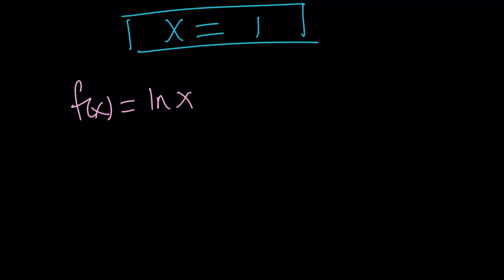If f of x is defined as ln x, then we can take the first derivative, and that would become 1 over x. Now, this kind of tells you that this is not going to be 0, therefore no max or min. There's no extrema on this function.